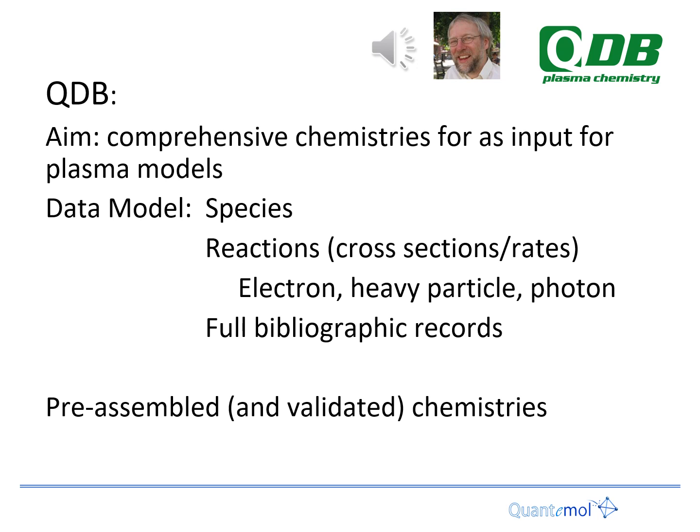What was the big-picture aim? The QDB was basically to provide complete chemistries as input for plasma models. There are a number of databases around, but the majority tend to focus on electron collisions, ion-particle collisions, or surface data, but there's rather a lack of a one-stop shop for everything. It was also in response to the fact that we were getting a lot of requests to hand-assemble these chemistries from various users, and it seemed more sensible to actually construct everything in a big database and then assemble the chemistries from that.